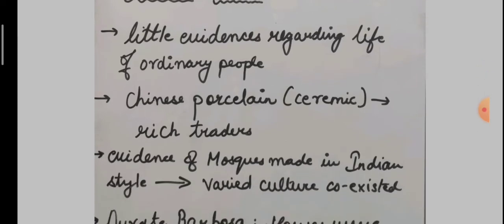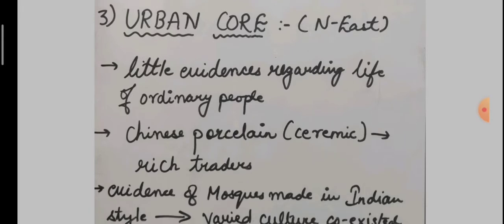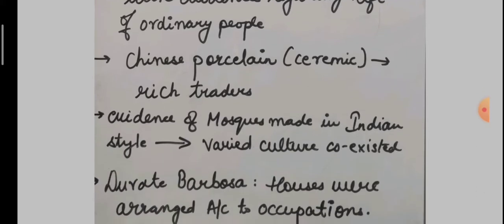in the northeastern corners of the urban core, and suggest that these areas may have been occupied by rich traders. The urban core part of the Vijayanagara Empire, which lies in the northeastern part, shows that ordinary people's evidence is very low. We know that the people who were there were the rich traders because there is Chinese porcelain, which is a kind of Chinese ceramic that we get there.